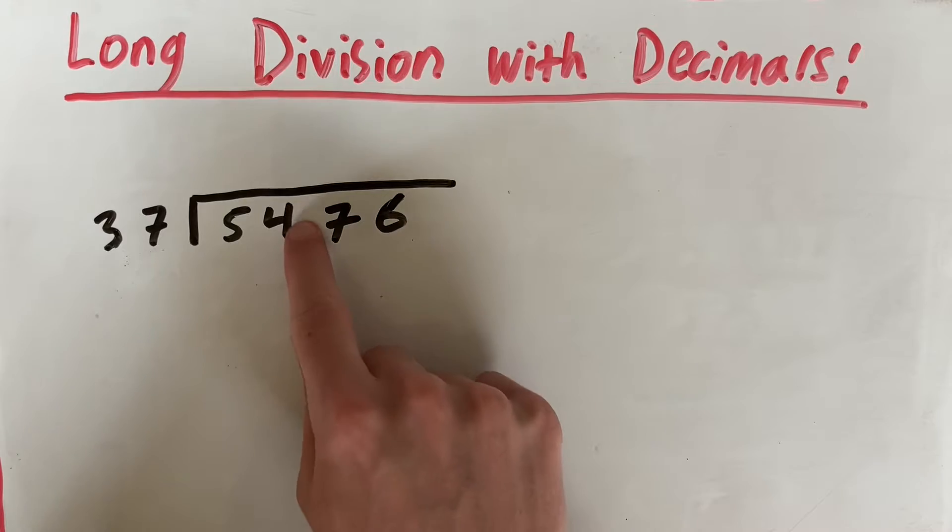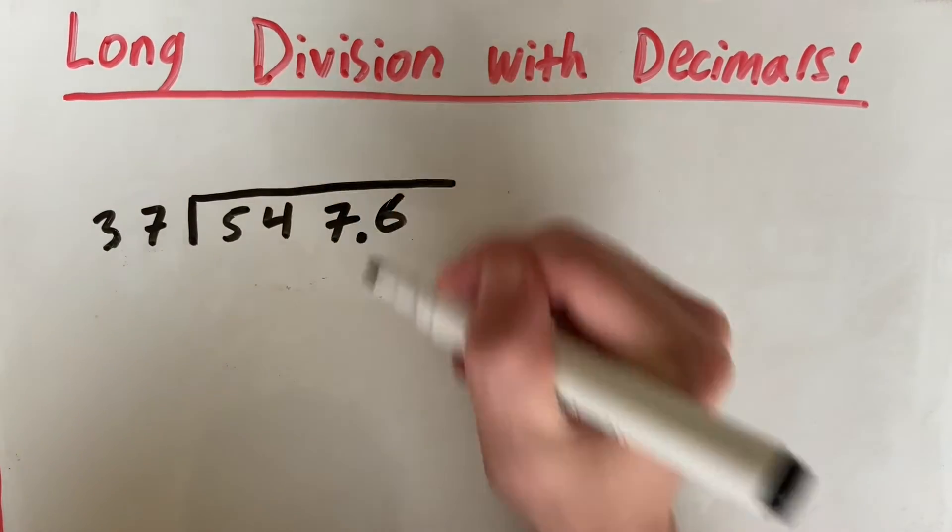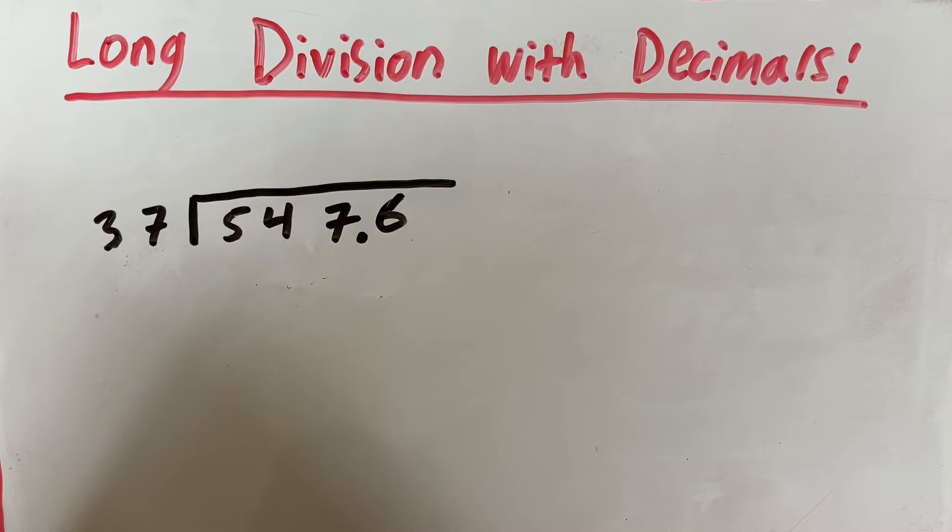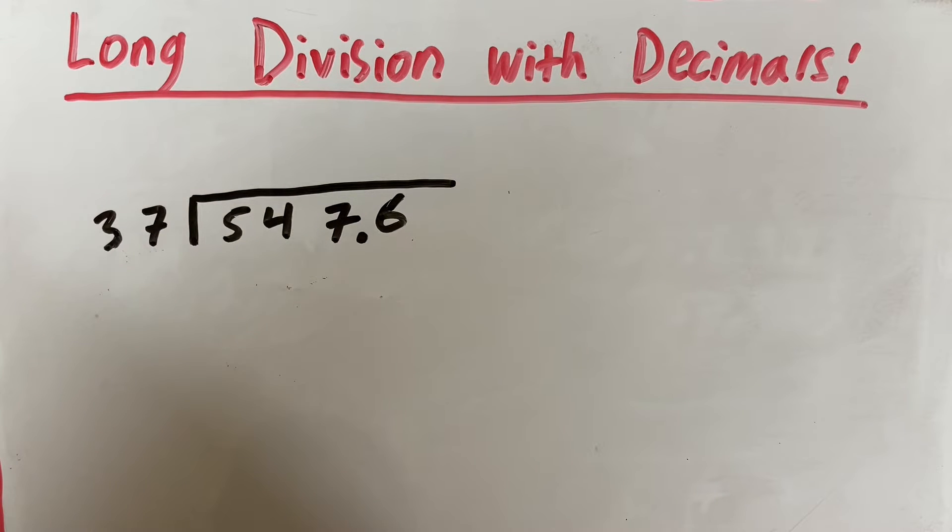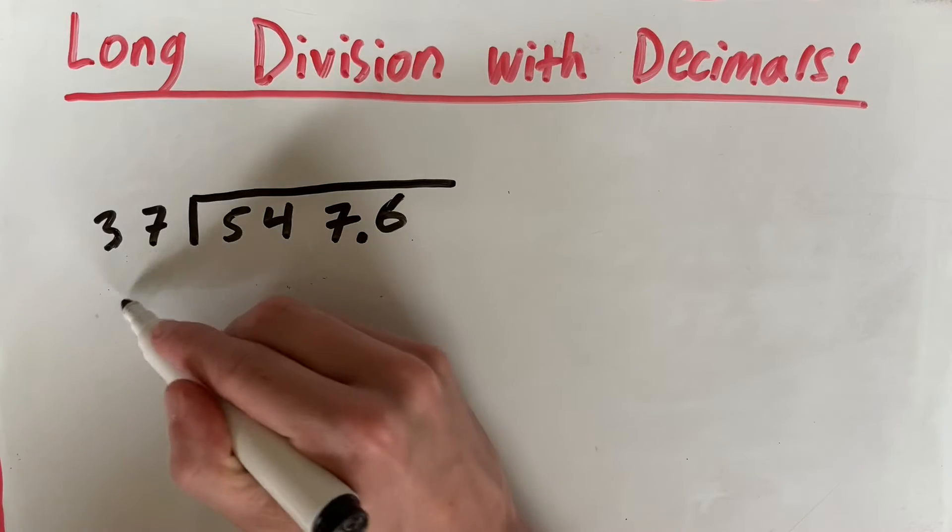But what you do to this number, you also have to do to this one. So we'll shift it one to the right there as well. So that becomes 547.6. And now we don't have a decimal here, which is really good. That makes long division really easy and we just do it like normal.